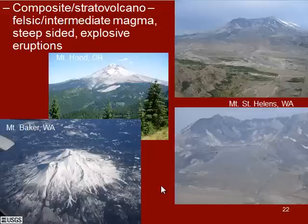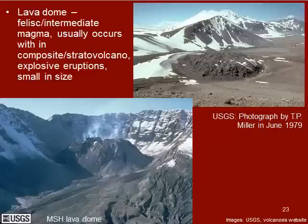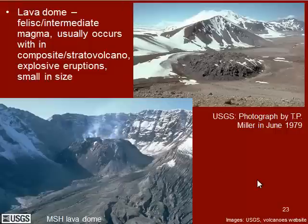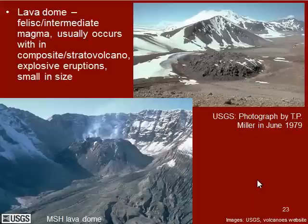In composite or stratovolcanoes, such as in the crater of Mount St. Helens, what we have is a lava dome. Here you can see a close-up of that lava dome and some of the ash coming off of it as this volcano is basically reforming itself over time. These lava domes are smaller in scale, with felsic or intermediate magma, and they occur within a composite or stratovolcano. These are explosive eruptions, usually a little bit smaller, and we still get ash or tephra erupted when these lava domes are forming, but not nearly the size as when a composite volcano completely blows up.